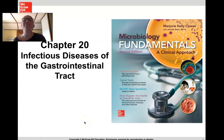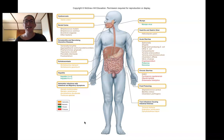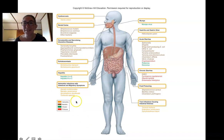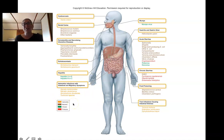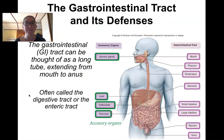Hey guys, welcome to the chapter 20 lecture, which is all about diseases of the gastrointestinal tract. This is going to be a long lecture because there are a lot of different pathogens that can affect the GI tract. Part of that is because there are so many parts of the gastrointestinal tract. This is one of my favorite chapters — maybe because I think poop and vomit are funny, or because I love helminths. This is really the only system where we focus on helminth pathogens, because although helminths can infect other body systems, they're not very common in Western developed countries.